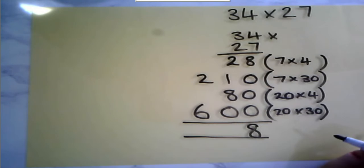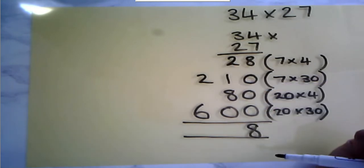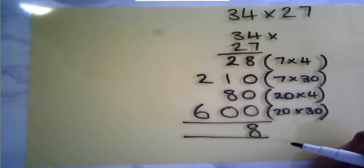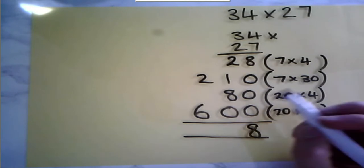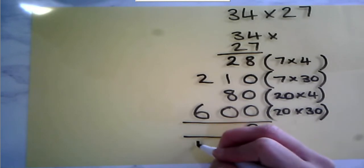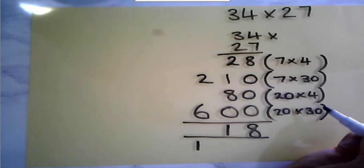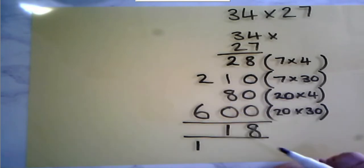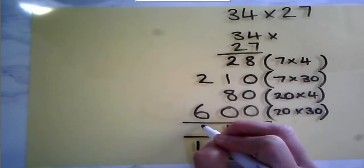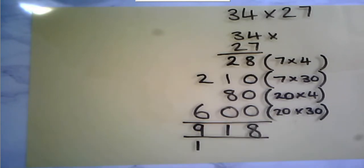8 add 0 gives us 8. 2 tens add 8 tens gives us 10 tens. Add that 1 ten gives us 11 tens. So I'm going to exchange ten of those tens for one hundred, pop that in my hundreds column, and the one ten that I've got left is going to go in my tens column. I then have 2 one hundreds, add 6 one hundreds, which gives me 8 one hundreds. Add my extra one hundred here, and I've got 9 one hundreds. So my answer is 918.